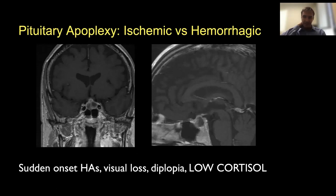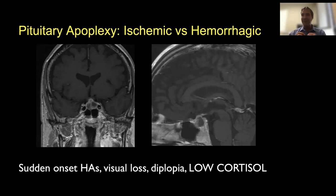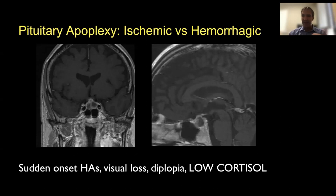There is a very important entity to remember: pituitary apoplexy. This is a clinical syndrome — not just an imaging diagnosis. The patient presents with a sudden onset of headaches, and if the tumor is large enough, visual loss that can be severe. Sometimes it compresses the cavernous sinus with double vision, and often with low cortisol because the gland is damaged. What happens is the tumor either bleeds or gets ischemia — the ischemia causes swelling, which compresses the pituitary gland around it and damages the gland, resulting in hypocortisolemia.